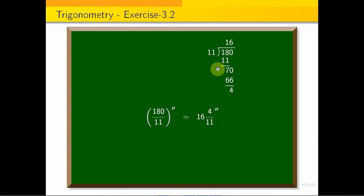For the seconds: (3/11) × 60 = 180/11 = 16 and 4/11 seconds. So θ equals 65 degrees, 27 minutes, 16 seconds. This is the answer.